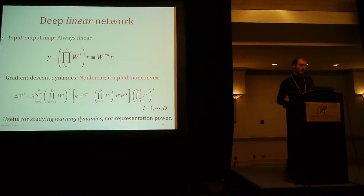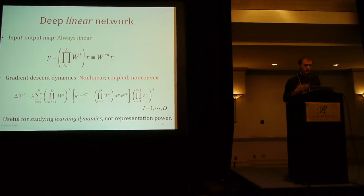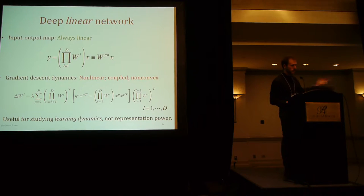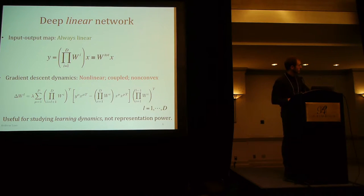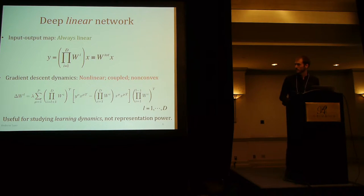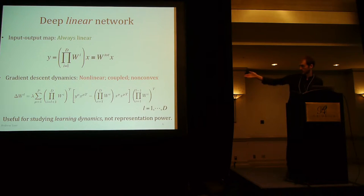You're probably thinking, didn't you just make it trivial? Because all we're doing is multiplying weight matrices together — it's completely linear, you can just rewrite it as one matrix W_total. And that's definitely true. However, when you're doing learning, you're doing learning on some loss function which is non-linear, and in fact the gradient descent dynamics are non-linear, and they're coupled, and they're non-convex. That's what we have to solve.